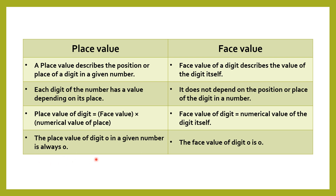The place value of digit 0 in a given number is always 0, irrespective of the place — because 0 multiplied by any position value gives 0. Coming to face value: face value of a digit describes the value of the digit itself. It does not depend on the position or place. Face value of digit 0 is 0 because the numerical value of 0 is always 0.